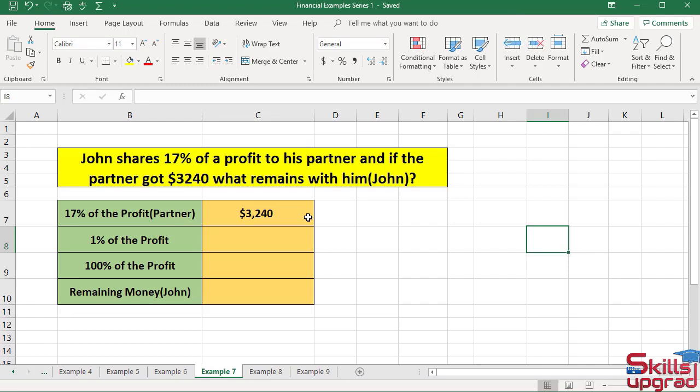As 17% of the profit is $3240, to calculate 1% of the profit, divide $3240 by 17. Activate cell reference C8, enter equal sign, click this cell reference, enter division operator, type 17, and press Enter.